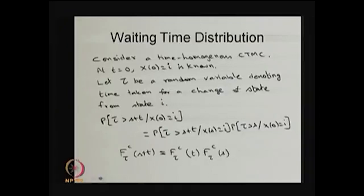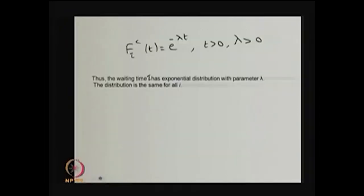To summarize, the time spent in each state is exponentially distributed with parameter λ_i. The distribution type is the same for all states i, but the value of the parameter λ may depend on i.